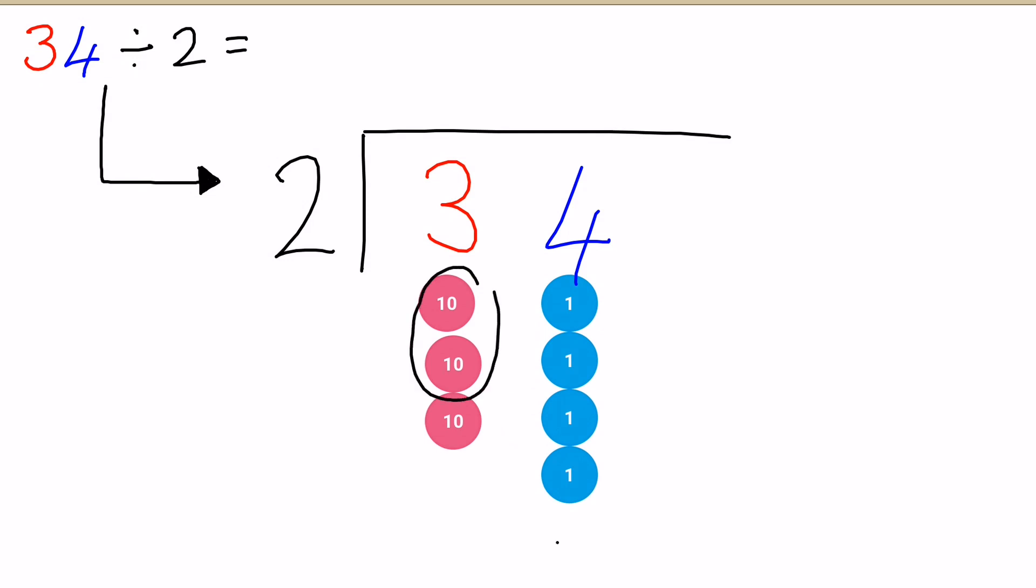So we have a group of 2 here, and then we have 1 left over. So we're going to write the 1 here to show that there is 1 group of 2 in 3, and the 1 that's left over, we're going to move across to here.